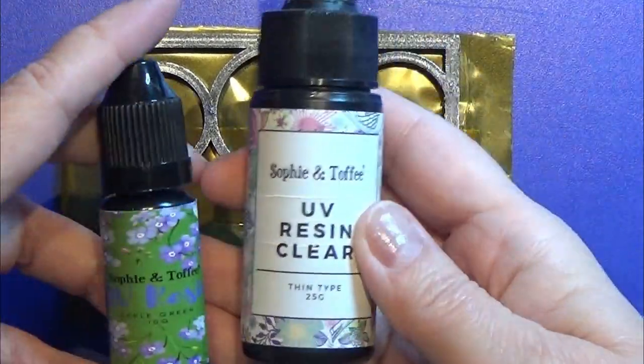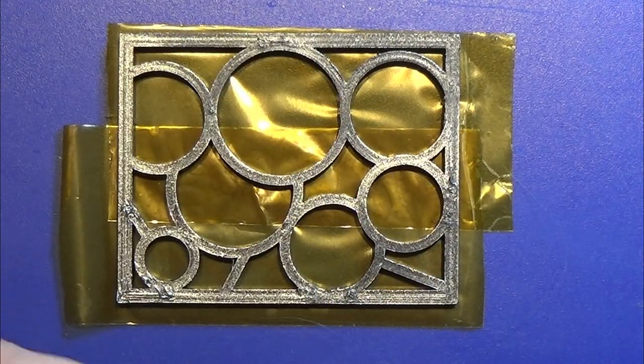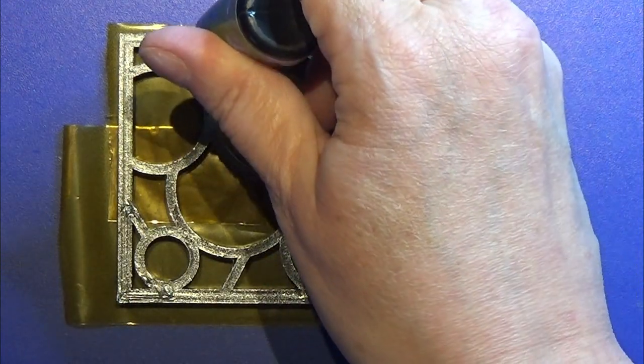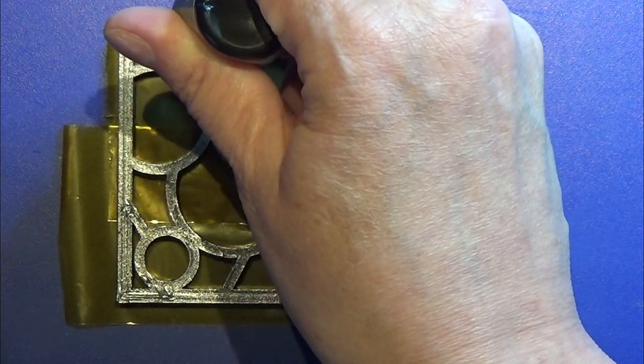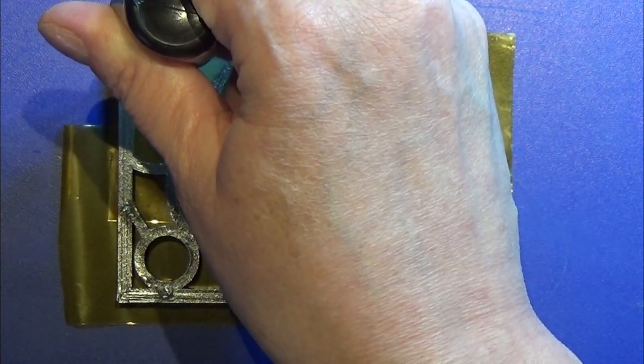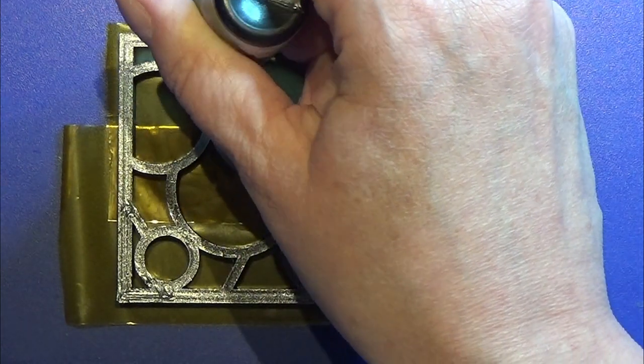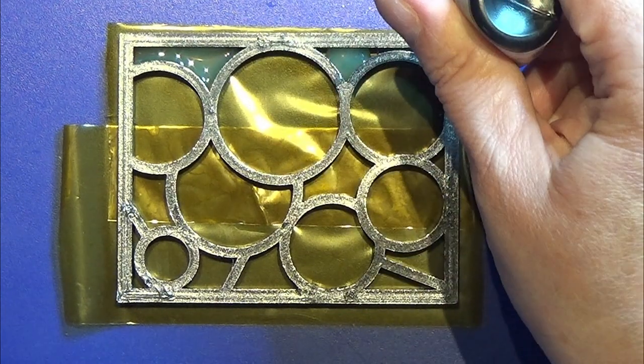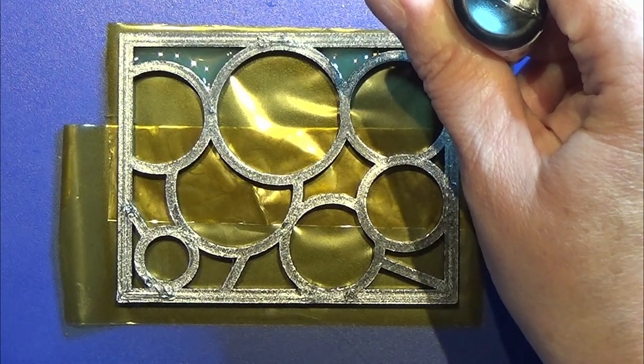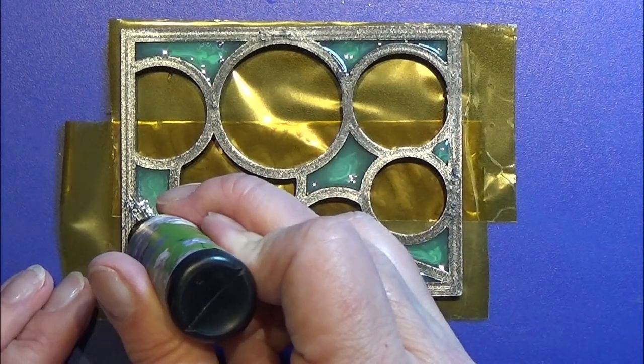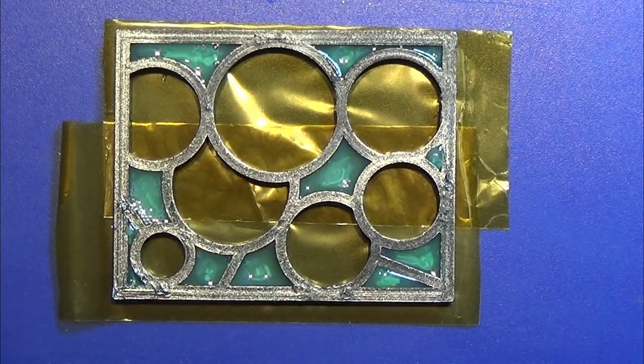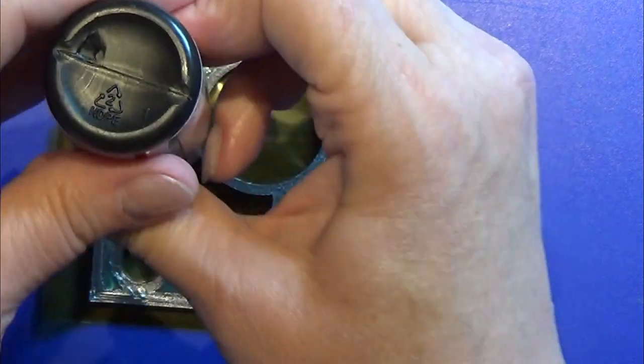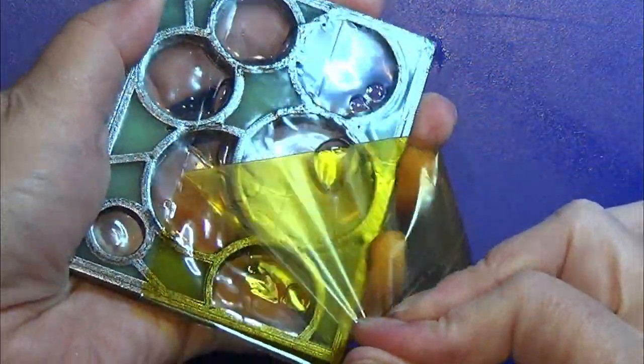I placed some tape on the back side of the window and filled up the holes with UV resin. I used apple green and translucent. After hardening in the UV lamp, I pulled off the tape.